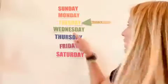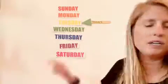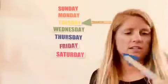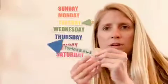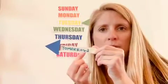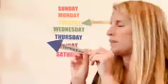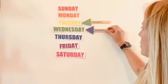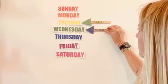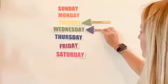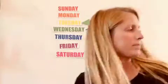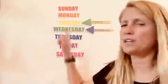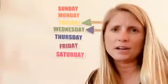Then if today is Tuesday, tomorrow will be Wednesday. So this blue arrow says tomorrow — tomorrow will be Wednesday. And if today is Tuesday, yesterday was Monday.